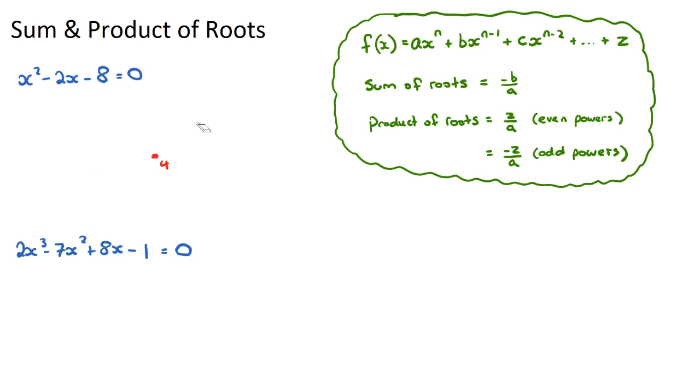Okay, so with our quadratic here, if we apply the sum of roots, the equation says it will be negative b, so it will be negative negative 2 over 1, which would just be 2, which is accurate to our drawing before, because our two roots were negative 2 and 4, and if we were to sum these, we would get positive 2.